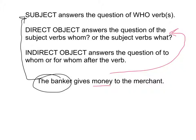And then finally, the indirect object answers the question to whom or for whom. So, the banker gives money to whom? To the merchant. The banker gives money for whom? For the merchant. So, the merchant is the indirect object in the sentence.